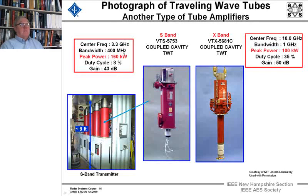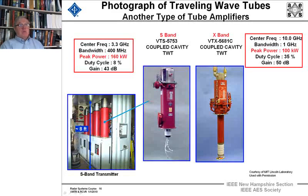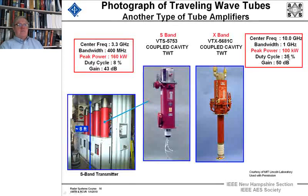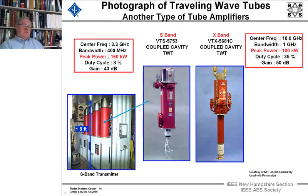This one has a bandwidth of 400 MHz. Moving to the really impressive example — these tubes require enormous cooling, obviously, for 160 kilowatts of output. They are cooled by ethylene glycol. Here's an X-band coupled-cavity traveling wave tube: its center frequency is in the X-band region, it has a gigahertz of bandwidth, a 35% duty cycle, and 50 dB of gain — that's magnificent. The Haystack radar at Millstone Hill in Westford, Massachusetts has used this kind of tube for decades.